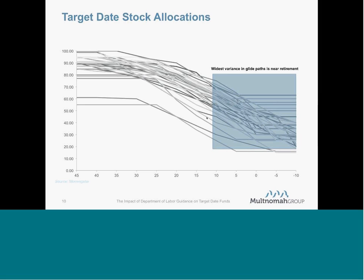The differences in glide path are tremendous. Looking at the 15 largest target date products and comparing their equity glide path exposure: for those 45 years from retirement, equity glide path exposure is somewhere between 80 and 99% of total portfolio exposure, with a few outliers. Where you see the broadest disagreement about appropriate equity risk is really from 10 years to retirement to 10 years past retirement, where equity glide path exposure can be as much as three to four times different from most aggressive to least aggressive.